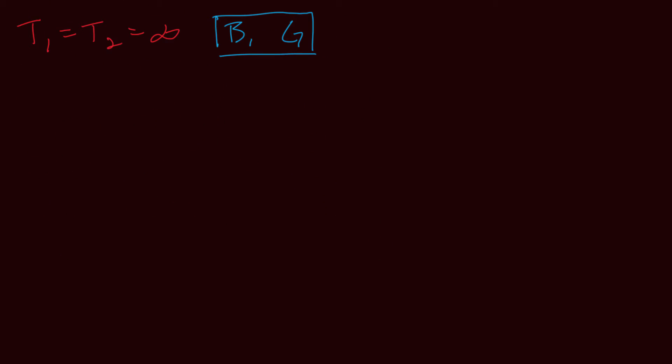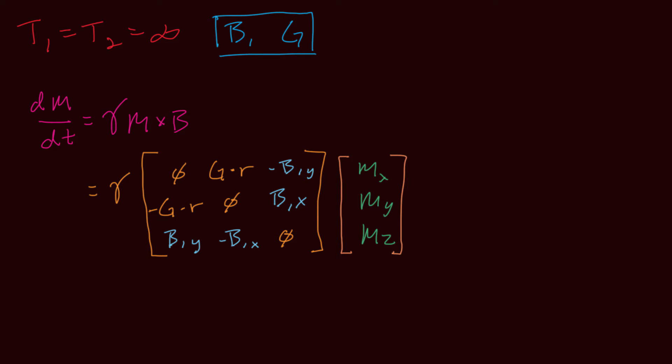The Bloch equation without relaxation says that the derivative of the magnetization is gamma m cross B. In the rotating frame, it expands to this, which basically says that the gradient field, which modulates only Bz, rotates transverse magnetization about the z-axis, while the B1 field, which lies in the transverse plane, rotates magnetization between z and transverse components.